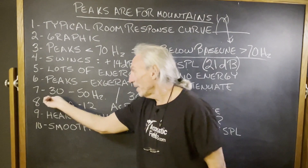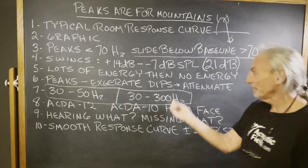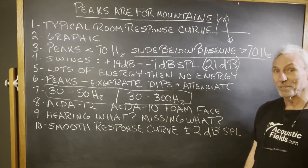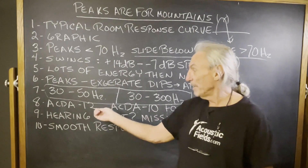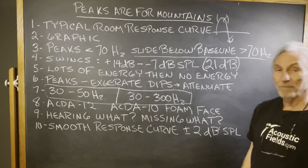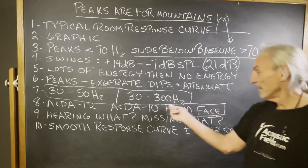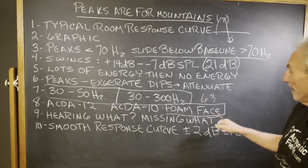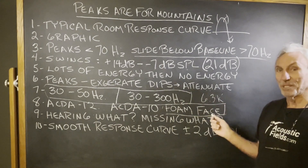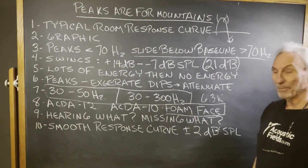When we were testing our products and doing our design work, we noticed two things: these frequency responses — 30 to 50 and 30 to 300 — were constant in 95 to 97% of the rooms that we saw. That was the impetus behind the ACDA 12, because that's what it focuses on: 30 to 50, and 30 to 300 for the ACDA 10. You can see the data on our website. We put the foam face on both units, and that's how we get the extension up to 6,300 Hz — we get 6,300 with the foam, and 30 to 50 and 30 to 300 with the carbon.